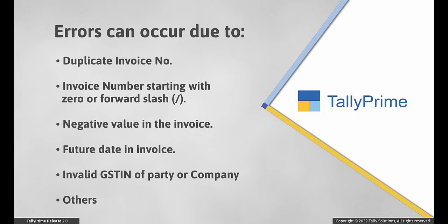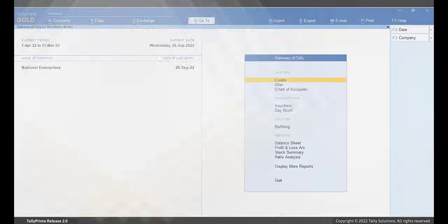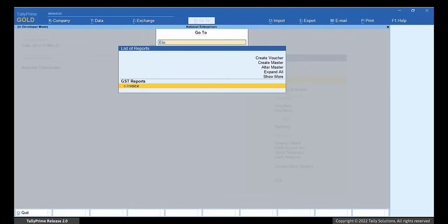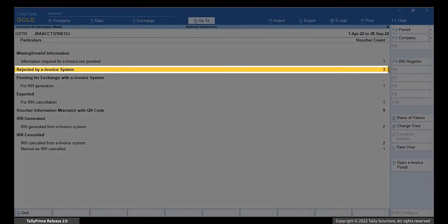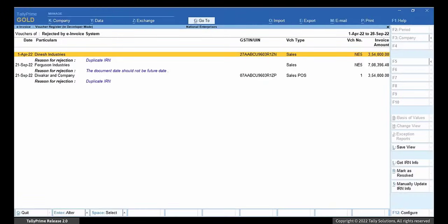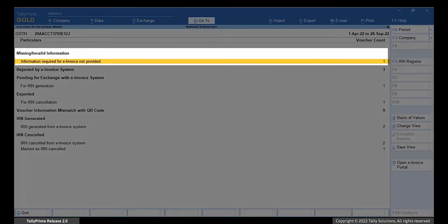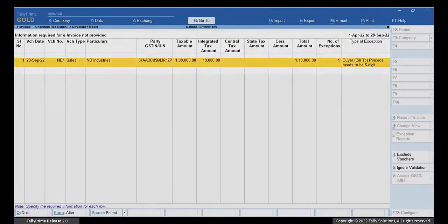Errors in e-invoicing can occur due to reasons such as use of duplicate invoice number, or an invoice number starting with 0, a negative value in the invoice, or a future date in invoice. An error also occurs when the GSTIN of the party or company is invalid due to incorrect format, presence of special characters, or other such reasons. In Tally Prime, you can drill down to identify the transactions rejected by e-invoice system or missing invalid information in respective sections of the e-invoice report.